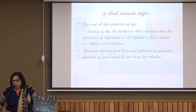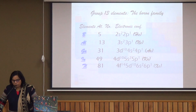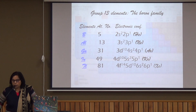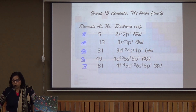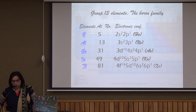In group 13, the stability of the +3 oxidation state decreases down the group. In group 18, there are noble gases, so they show inert properties. But in group 13, the elements are highly reactive. However, they are weaker non-metals than groups 14, 15, 16 and 17.